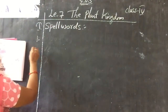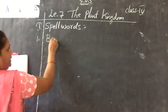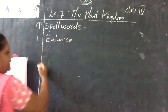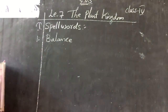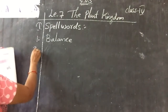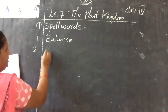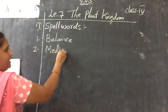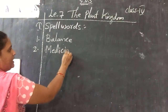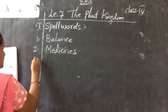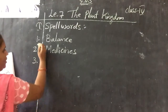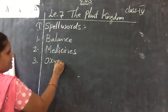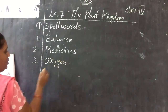Write down the first one: balance — B-A-L-A-N-C-E — balance. Second one: medicines — M-E-D-I-C-I-N-E-S — medicines. Third one: oxygen — O-X-Y-G-E-N — oxygen.